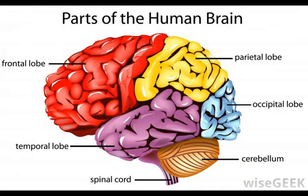The sylvian fissure is a deep, lateral indention that divides the lobes of the human brain. In essence, it divides the top of the brain from its bottom. It is the deepest and most easily discernible of the many fissures in the human brain. Other than serving as a major landmark of the brain's landscape, no purpose or specific function is known to be attributable to the sylvian fissure.